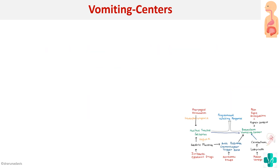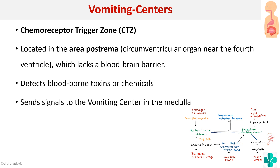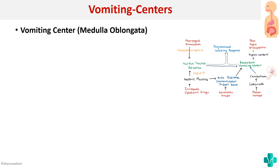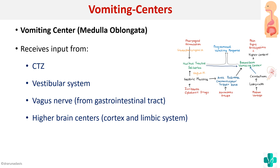The chemoreceptor trigger zone (CTZ) is present in the area postrema, a circumventricular organ near the fourth ventricle that lacks a blood-brain barrier, allowing it to come in direct contact with blood-borne toxins or chemicals and send signals to the vomiting center in the medulla. The main vomiting center in the medulla oblongata receives input from the CTZ, the vestibular system, the vagus nerve, and higher brain centers including the cortex and limbic system.